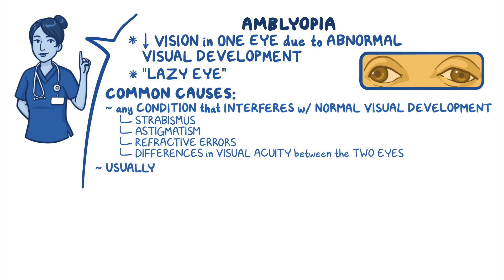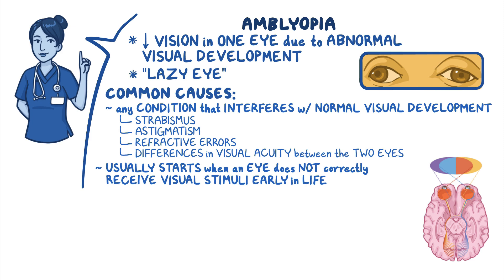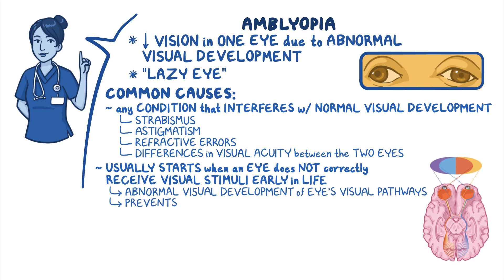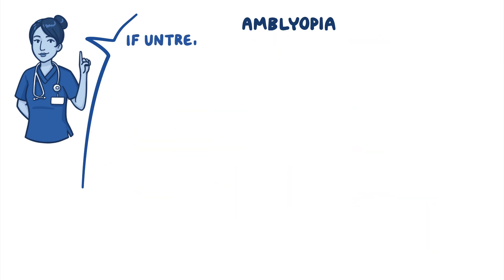Amblyopia usually starts when an eye does not correctly receive visual stimuli early in the client's life, resulting in abnormal visual development of that eye's visual pathways, which prevents them from translating clear images to the visual cortex of the brain. If untreated, amblyopia can progress to blindness in one or both eyes.